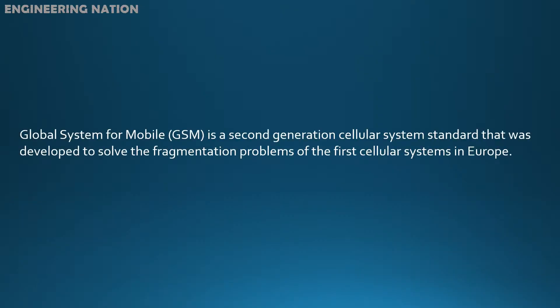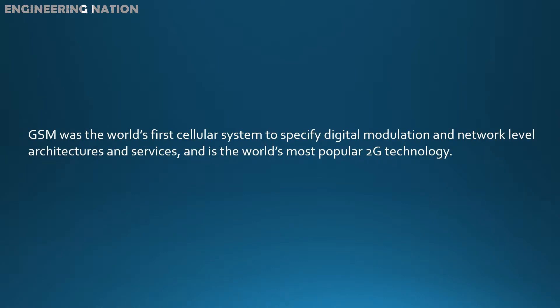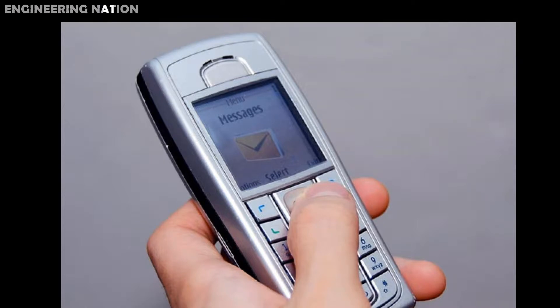Global System for Mobile, GSM, is a second generation cellular system standard that was developed to solve the fragmentation problems of the first cellular systems in Europe. GSM was the world's first cellular system to specify digital modulation and network level architectures and services, and is the world's most popular 2G technology.